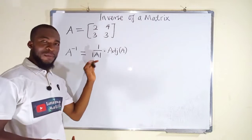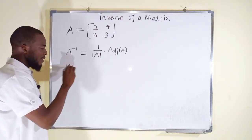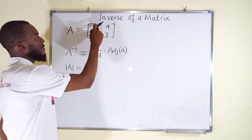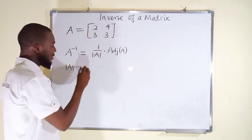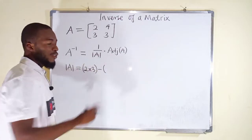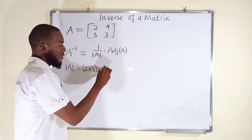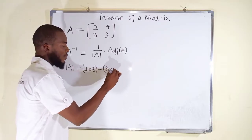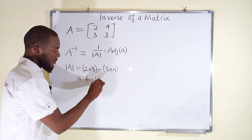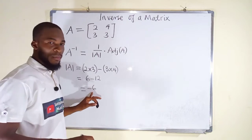Let's start by finding the determinant of this matrix. We are going to multiply the leading diagonals together: 2 multiplied by 3. Then you subtract the product of the other diagonals: 3 times 4. This is equal to 6 minus 12, which is equal to negative 6. This is our determinant.